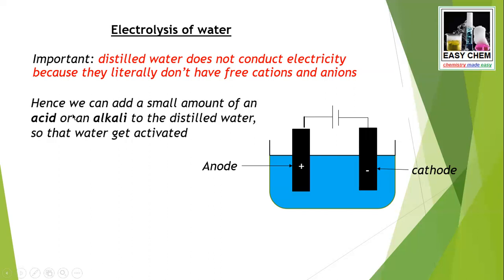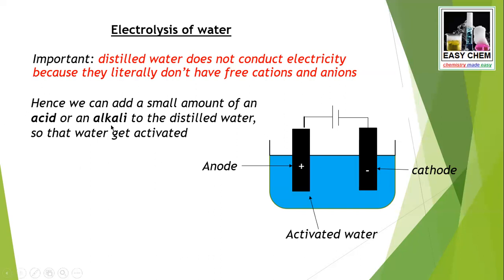We have to do something — we can add a small amount of an acid or an alkali to the distilled water so that the water gets activated. To electrolyze a water sample, you have to add a bit of an acid (hydrogen donors) or an alkali (hydrogen acceptors) in order to make the distilled water able to pass electricity. When you add acid or alkali, it is no longer distilled water — it is activated water, or acidified water.